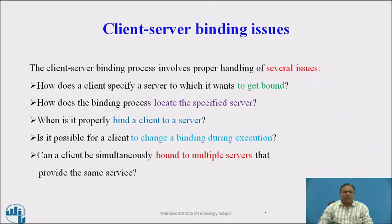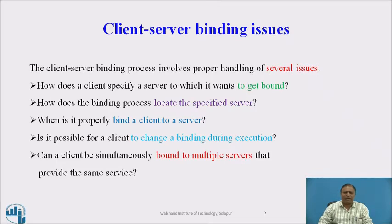The Client-Server binding process involves proper handling of several issues. How does a client specify a server to which it wants to get bound — how the client will be connected to the server? How does the binding process locate the specified server? With a number of servers available, the binding process must locate a specific server. When binding a client to a server, it describes how the binding procedure can take place between client and server.